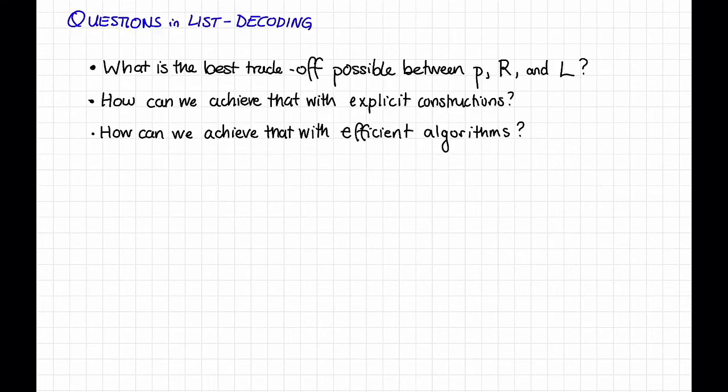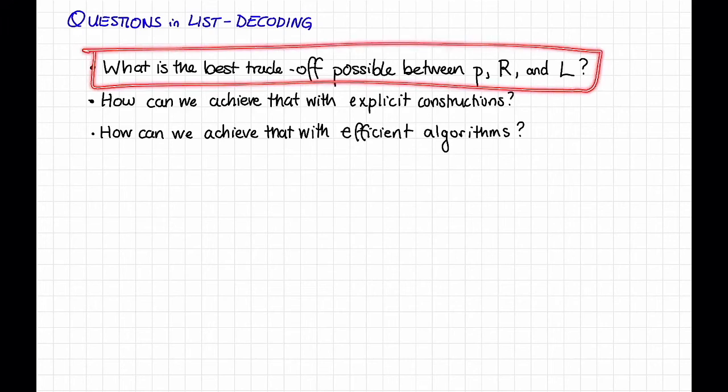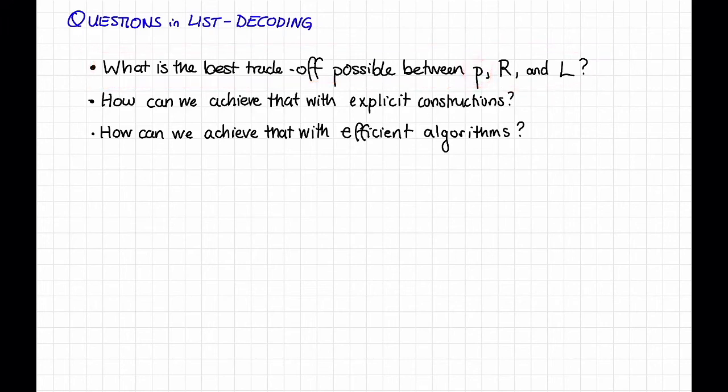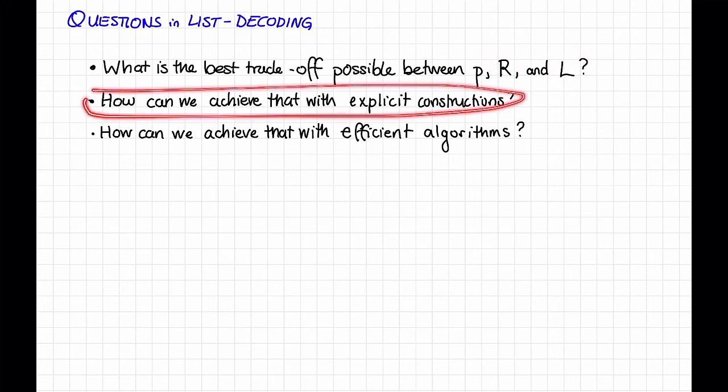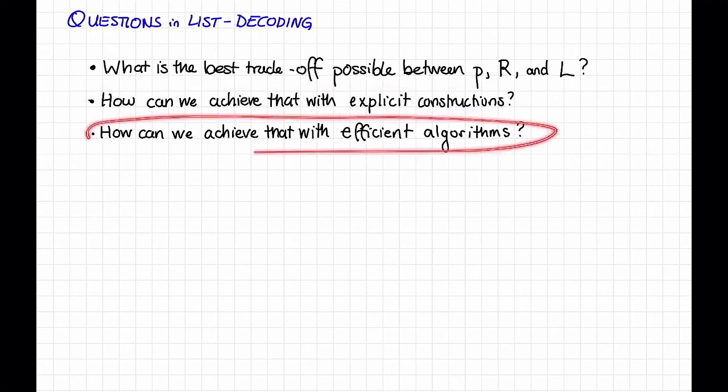We can ask the same questions about list decoding as we did about unique decoding. So the first question is, what is the best possible tradeoff between P, the list decoding radius, R, the rate of the code, and L, the list size? Second, how can we achieve good tradeoffs, or ideally the best possible tradeoff, with explicit constructions? And how can we do that with efficient algorithms?